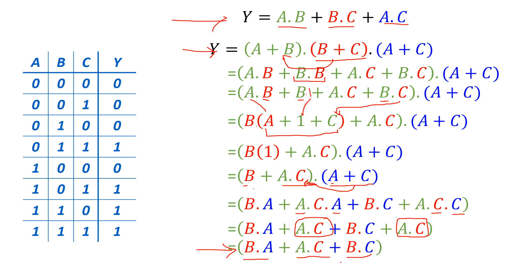So we've shown that from a truth table and Karnaugh map, we can either group ones to get the minimized sum of products or group zeros to get the minimized product of sums. Using Boolean algebra, we verified that the minimized product of sums is in fact equivalent to the minimized sum of products. That concludes the video on how to group zeros to obtain a minimized product of sums.